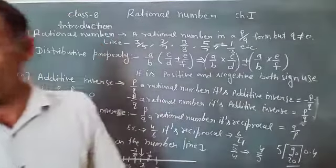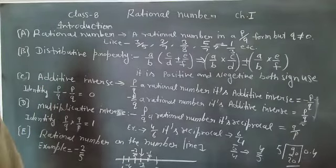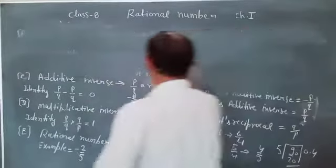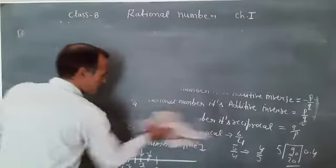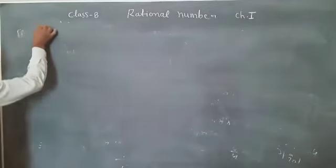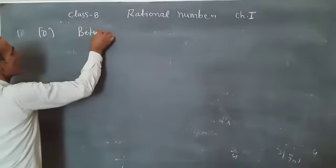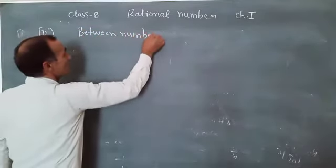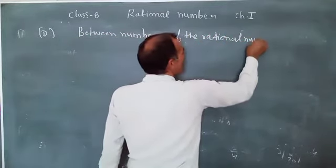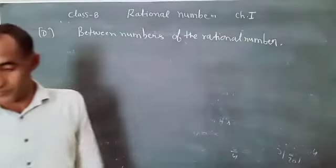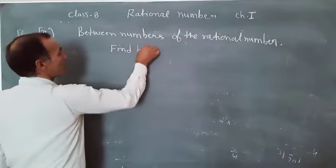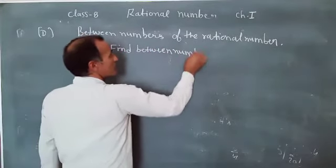Similarly, you do other examples. And our last topic is rational numbers between the rational numbers. Between numbers of the rational numbers. It is the last topic of Chapter 1.